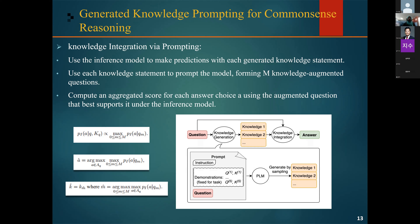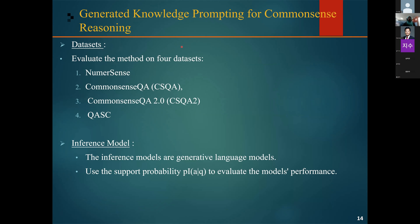To evaluate these methods, they use four datasets: the NumerSense dataset, the CommonsenseQA dataset, CommonsenseQA 2, and the Question Answering Science dataset. The NumerSense dataset has numerical statements where the masked number must be recovered using zero-shot inference models. CommonsenseQA is a five-way dataset about common scenarios with five choices for the model.